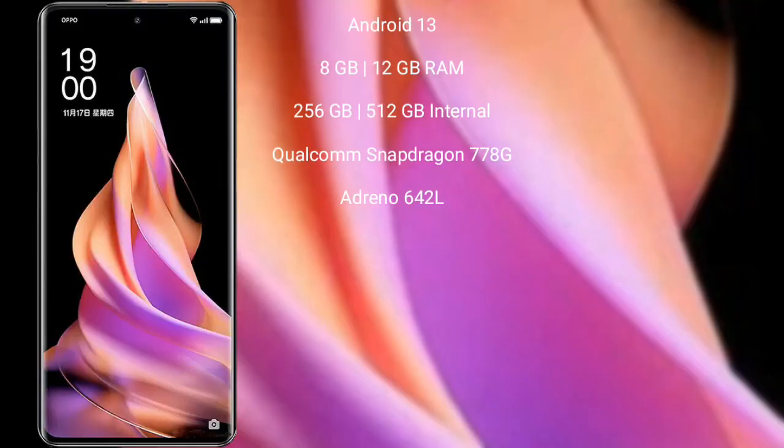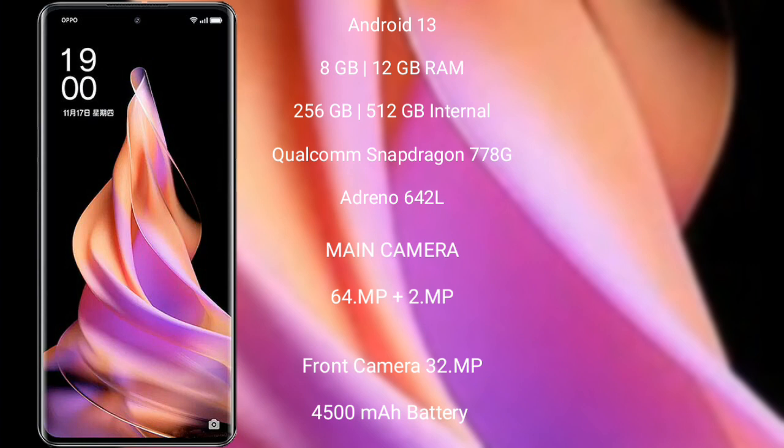OPPO Reno 9 runs on the Android 13 operating system. OPPO Reno 9 comes with 8GB and 12GB RAM and 256GB to 512GB internal storage.